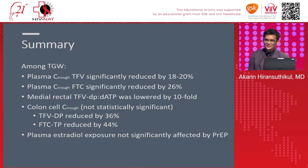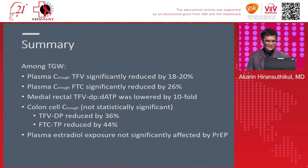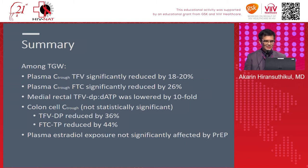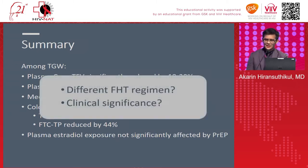In summary of all three 2018 studies, a similar trend was found among transgender women: plasma trough tenofovir significantly reduced by 18–20%; plasma trough FTC significantly reduced by 26%; in target rectal tissue, TFV-diphosphate to dATP ratio was lower by tenfold; in colon cells, although not statistically significant, there's a steep reduction in the active form of both tenofovir and FTC. Good news: plasma estradiol exposure was not significantly affected by PrEP. These data from 2018 are just scratching the surface, and many unanswered questions remain — including different feminizing hormone regimens and the clinical significance of 18–20–26% reductions for PrEP protective effect.